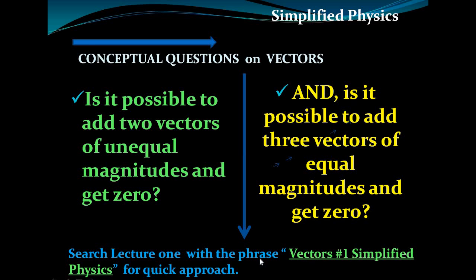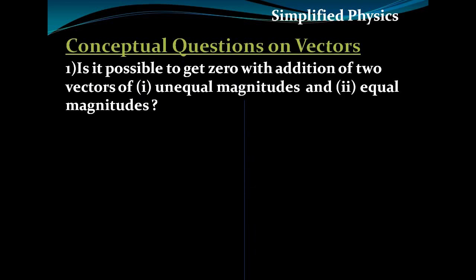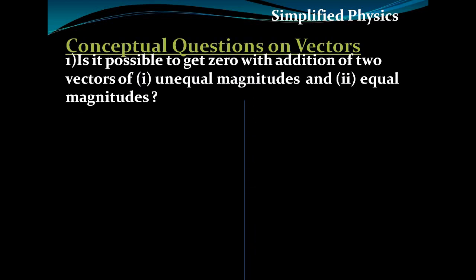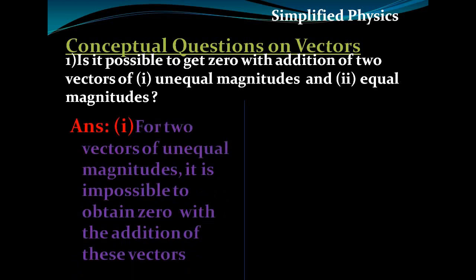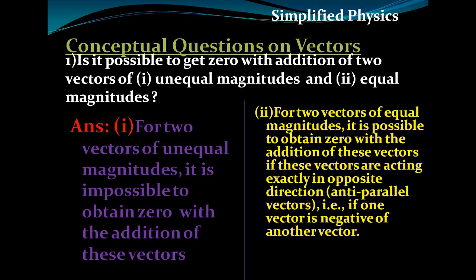Let's begin. The first question is: is it possible to get zero with the addition of two vectors of unequal magnitudes and equal magnitudes? If two vectors are of unequal magnitudes, it is generally impossible to obtain zero with the addition of those vectors — that is not possible. What if they are of equal magnitude?